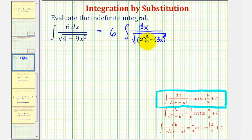In this form, we can identify a and u, and then find du. Notice that a equals positive 2, u equals 3x, which means du equals 3 dx.